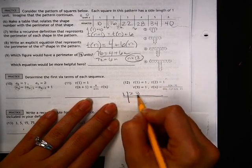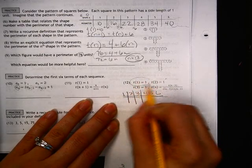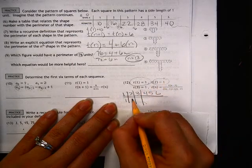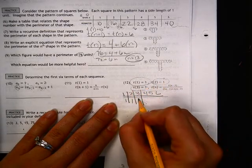We have 1, 2, 3, 4, 5, 6. So we have our first term, we have our second term, and we have our third term.